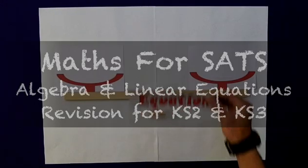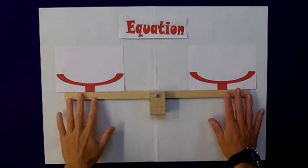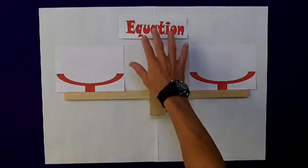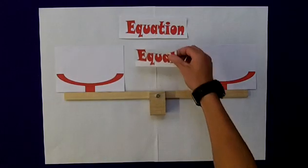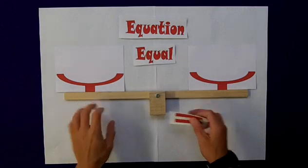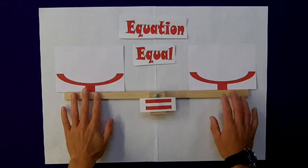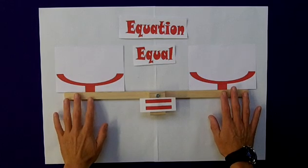I think possibly one of the best ways to help children solve and understand linear equations is to think about them as a set of balance scales. Indeed, if we take the word equation, we can almost get the word equal out of it. So what I like to think of is that my equal sign is actually in the middle, and that this side of my balance scales is equal to this side. It is balanced.